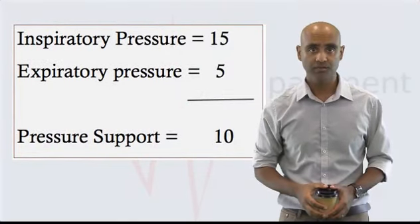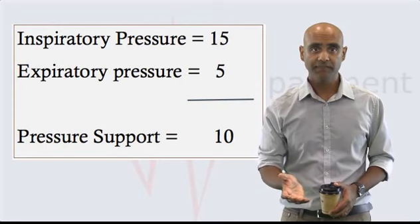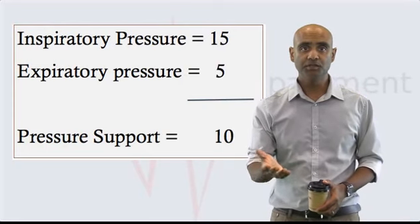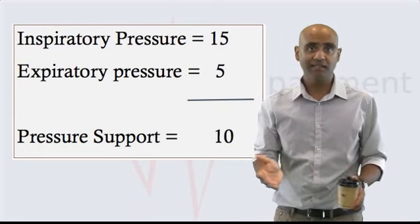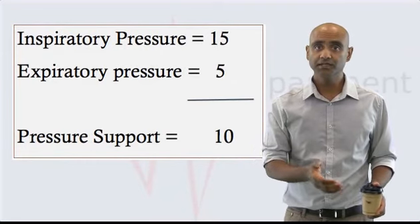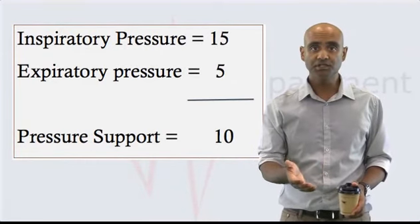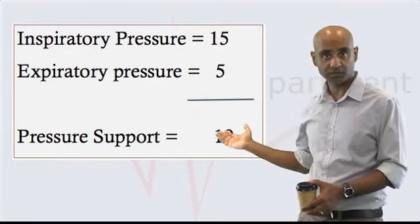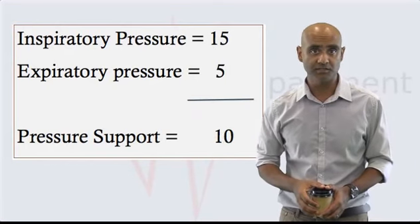As you can see, setting an inspiratory pressure of 15 and an expiratory pressure of 5 now produces a pressure support of 10 centimeters of water, as compared to the 6 centimeters of water he was receiving previously.